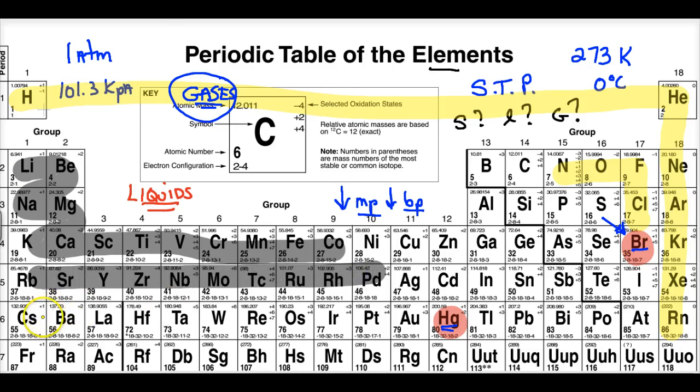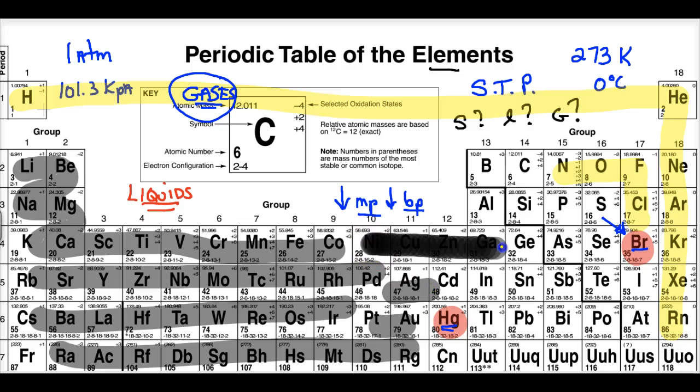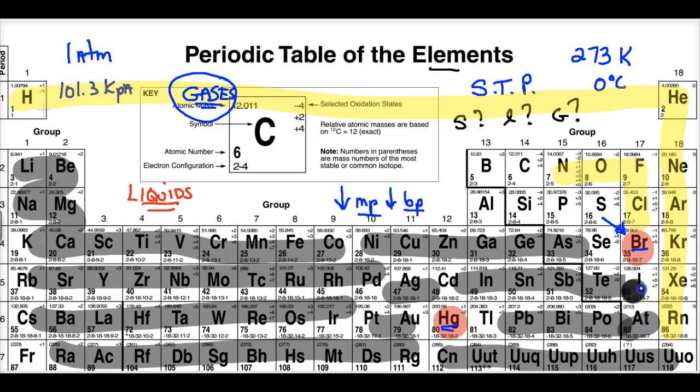Most of the periodic table are solids. So with the exception of the gases and liquids, everything is a solid at STP, except for the ones that I have what? Colored out.